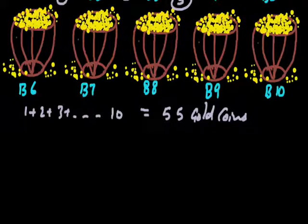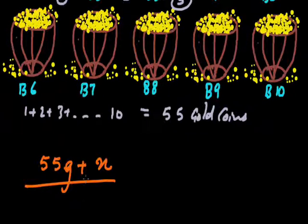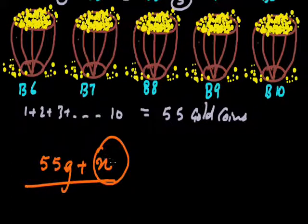We're going to weigh them. So the weight would be some 55 grams plus x. It would definitely come out to be something like this because there are 55 gold coins. Most of them are weighing 1 gram and there are some special coins which weigh 2 grams. So in any case the weight would be bigger than 55 and the difference is this x.